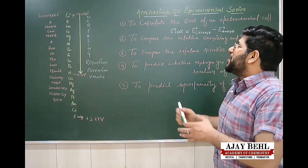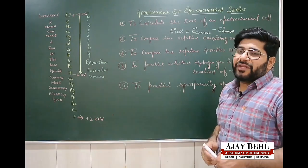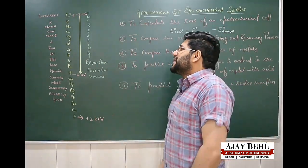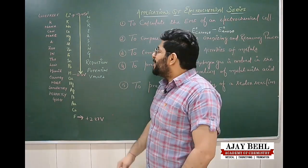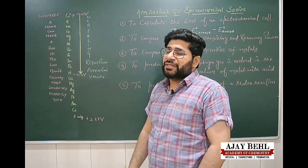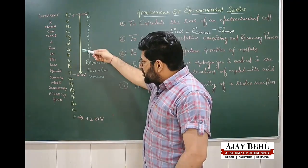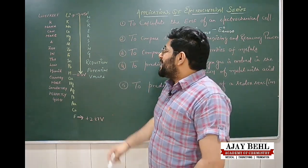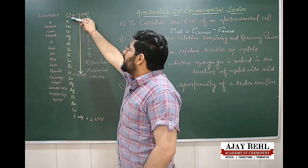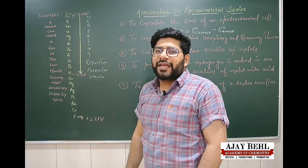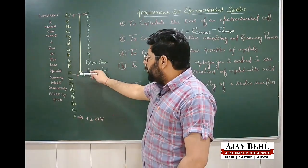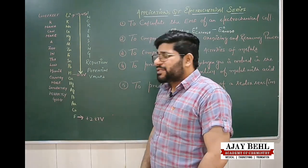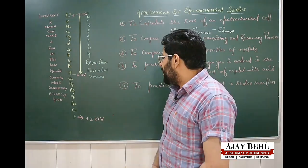What are the applications of this electrochemical series? Since it arranges elements in increasing order of their reduction potential values, as we go from top to bottom the reduction potential values increase. For example, lithium has a reduction potential of −3.05 V, hydrogen is 0 V, and fluorine is +2.87 V.